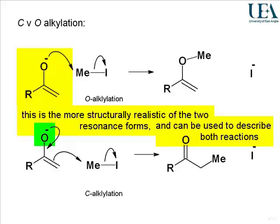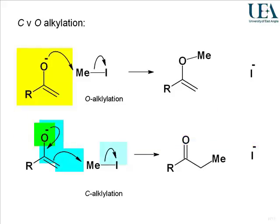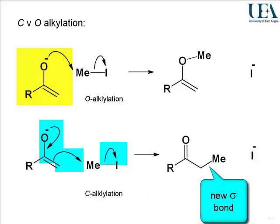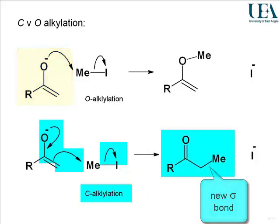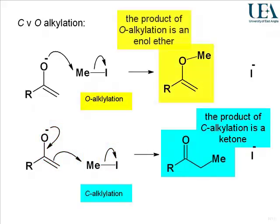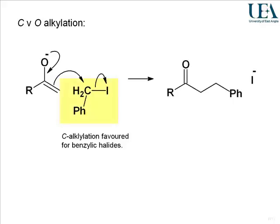That anionic oxygen atom is the driving force for the chemistry, pushing those electrons through the conjugated pi system until they come out to form the new sigma bond to the mesyl group. In that process, the carbon-iodine bond must break. So the C-alkylation process extends the carbon chain and makes a longer carbon chain, giving you a ketone, whereas the O-alkylation process generates an enol ether.